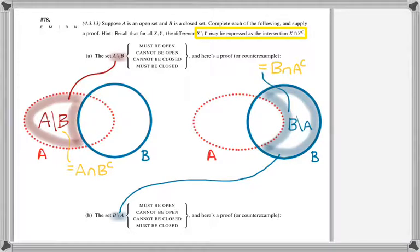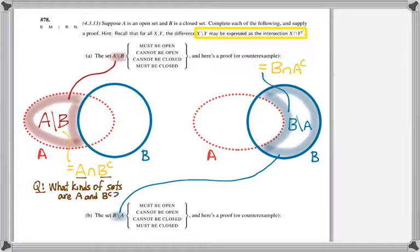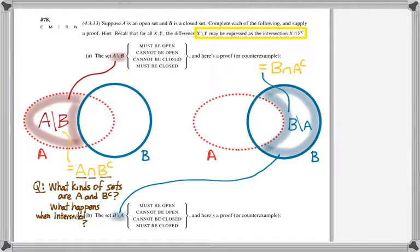By definition, A minus B is the intersection of A with the complement of B, and likewise for B minus A. So ask yourself: what do we know about the sets A and B-complement, given what we know about A and B? Then, what can we say about their intersection? Feel free to use a theorem here about the topology of intersections of sets.